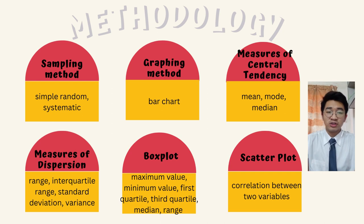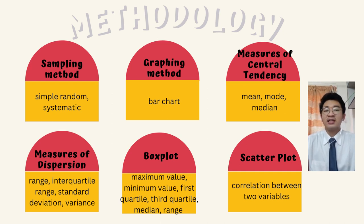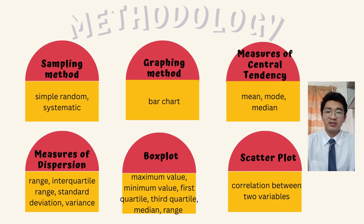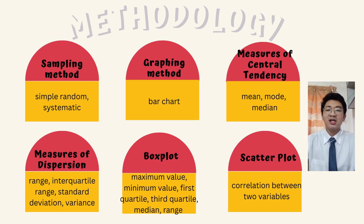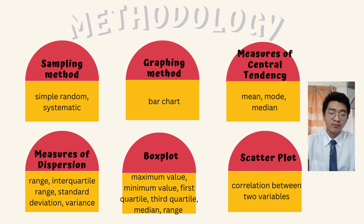Next, I'm going to talk about methodology. In this research, the sampling methods we use are simple, random, and systematic. For our graphing method, we use the bar chart. We also use measures of central tendency, which are mean, mode, and median. There are also measures of dispersion, which are range, interquartile range, standard deviation, and variance. We also draw a box plot in our research, which includes maximum value, minimum value, first quartile, third quartile, median, and range. Lastly, we also draw a scatter plot, which shows the correlation between two variables.